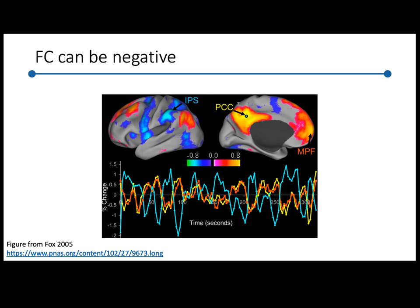It's also exciting that there are differences. For example, functional connectivity can be negative — you can have regions where when one goes positive, the other tends to go negative. That's something DTI might not capture, even though we know inhibitory connections exist. This is one of the seminal papers on resting state functional connectivity: while the PCC and medial prefrontal cortex tend to move together, the IPS tends to move in the opposite direction. These were identified as the default mode network and the task positive or cognitive control network.